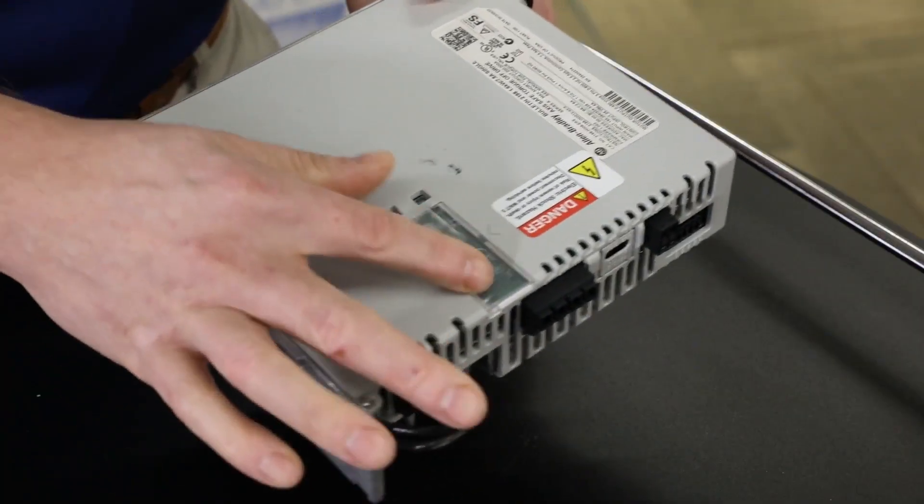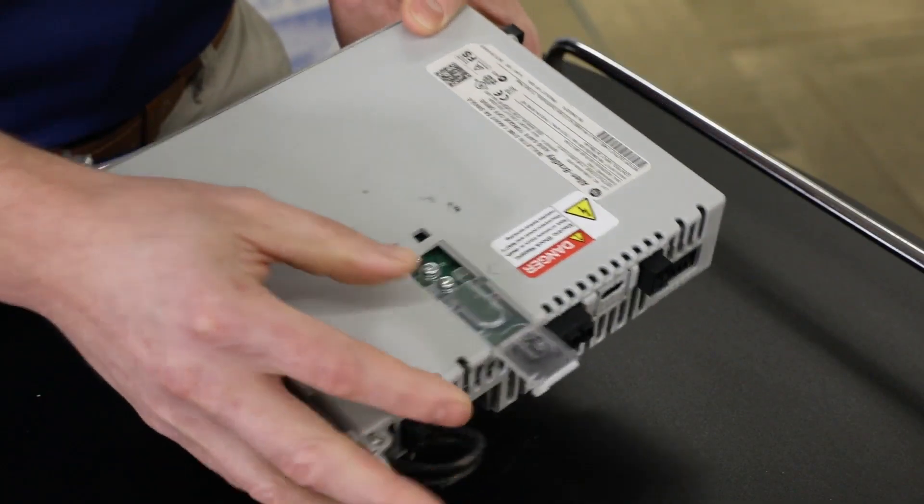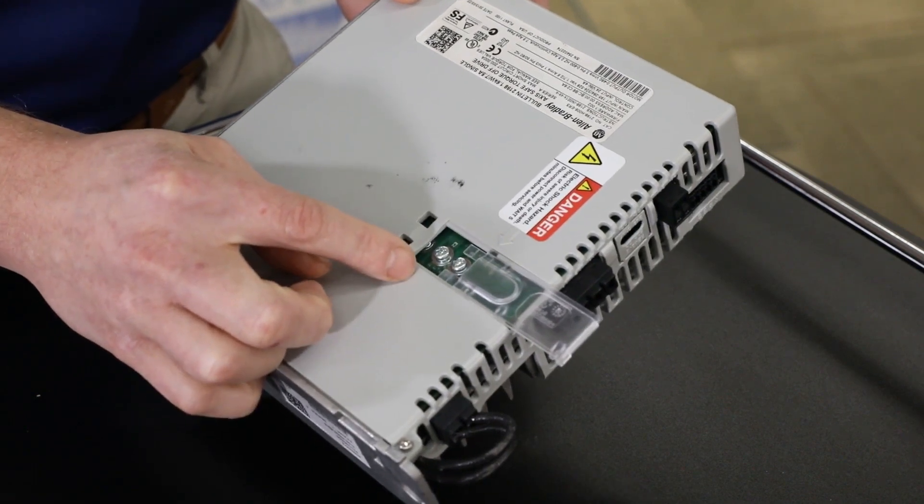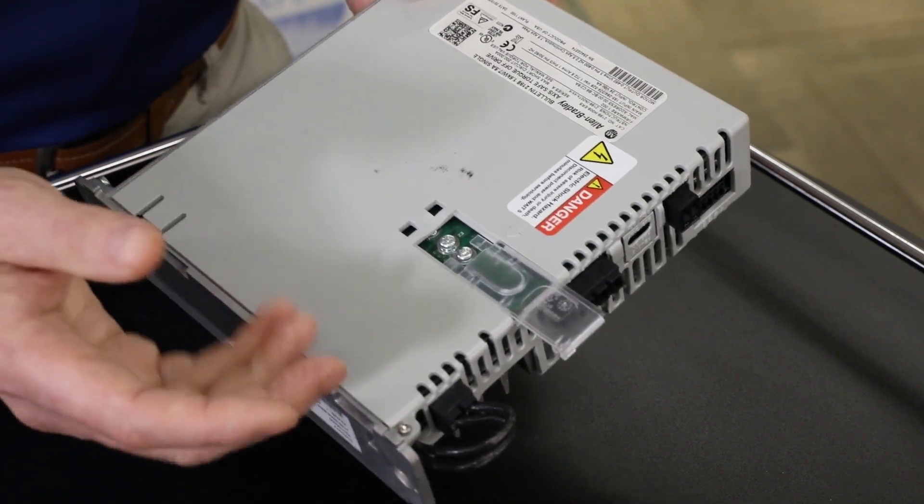Here is the Kinetics 5500 ground screw access port and you would follow the same procedures to install the grounding screw as you did for the Kinetics 5700.